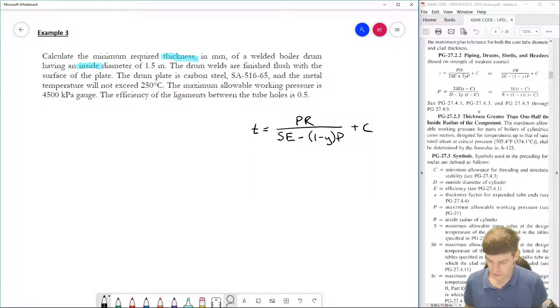So T is equal to PR over SE minus 1 minus Y times P plus C. So double-check my equation, okay, I've got it, all right, now I'm going to make a list of the things that I, all the variables in my problem. So I'm going to need P, I'm going to need R, I'm going to need S, I'm going to need capital E, I'm going to need Y, and I'm going to need C.